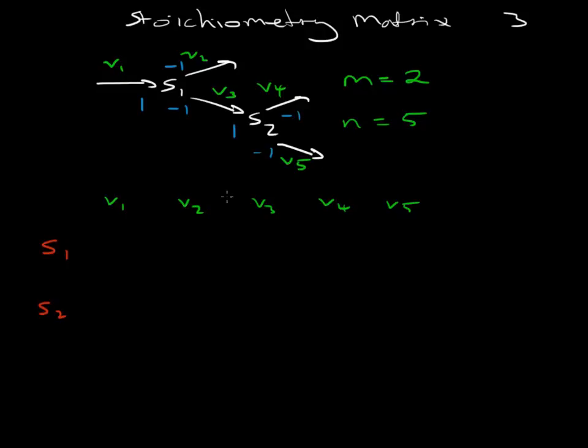Now from that information, I can now fill in this stoichiometric matrix. So for V1, V1 only involves S1 with a stoichiometric coefficient of one. It doesn't involve S2, so there's zero there. V2, again, only involves S1, but this time with a stoichiometric coefficient of minus one. So it's there and nothing in S2.